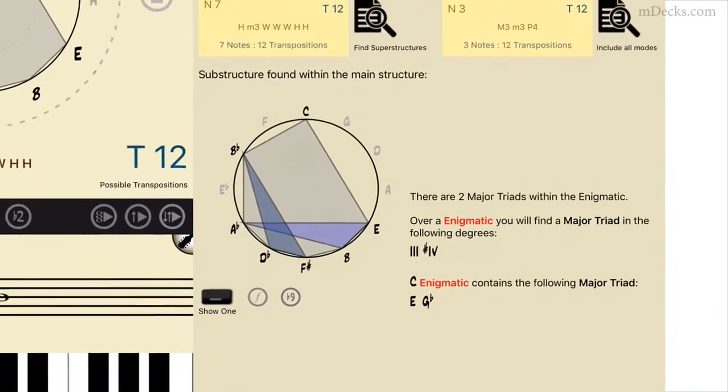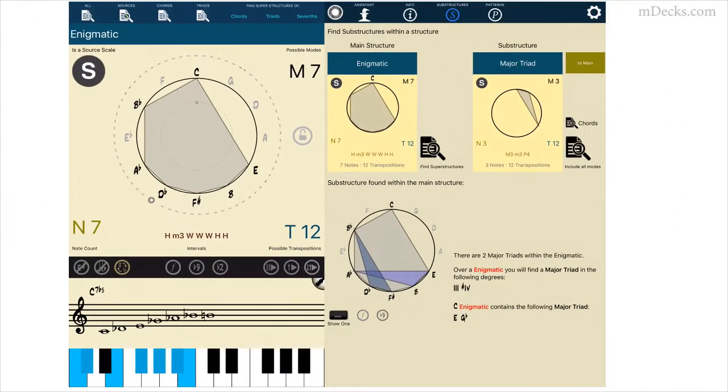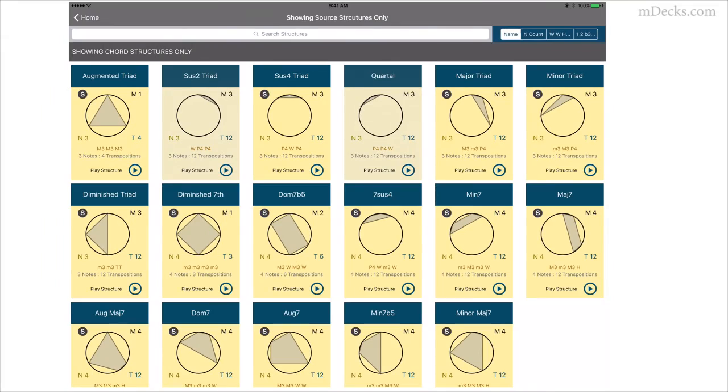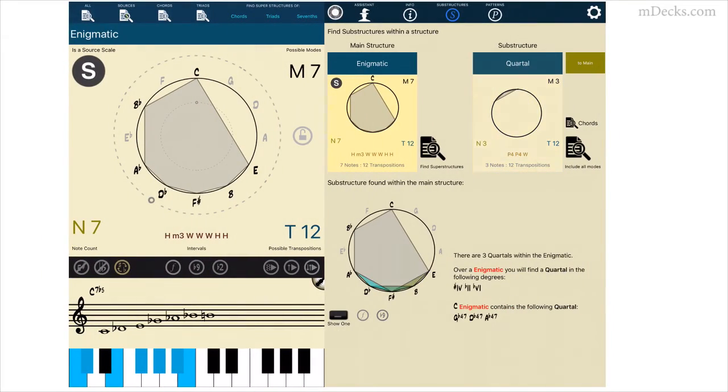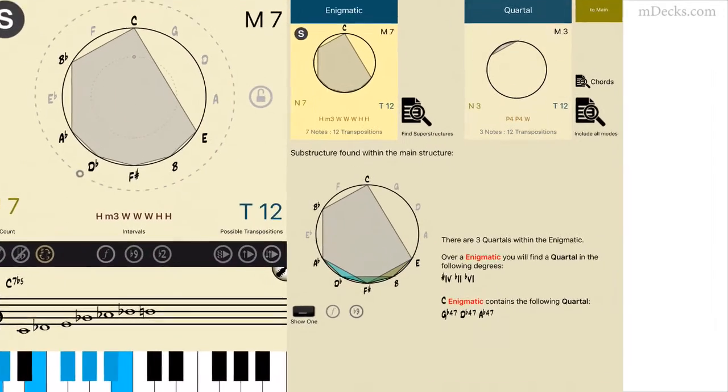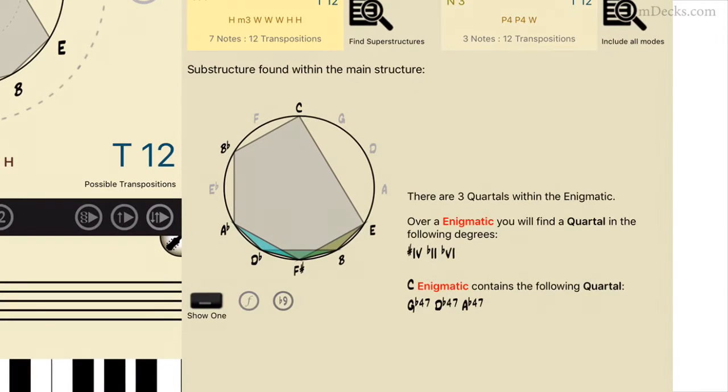Tessitura will check if any structure is contained in the enigmatic scale. So check for the ones you know best so you can use them to improvise over a C7 flat 5 with an enigmatic sound. I like using quartals to get a more contemporary sound. Let's see what we find. Great! There are three quartals. The sharp 4, the flat 2, and the flat 6.